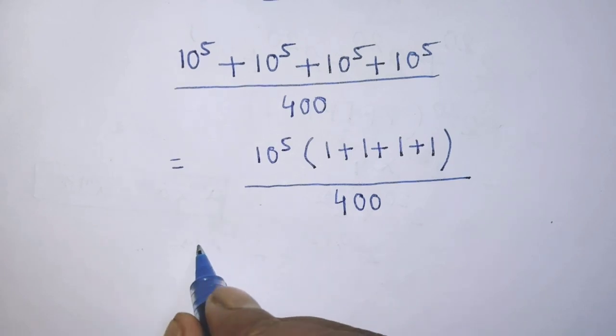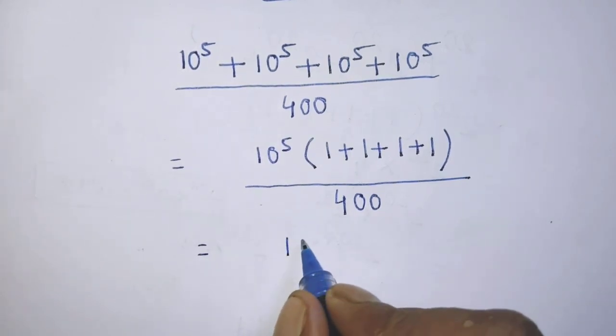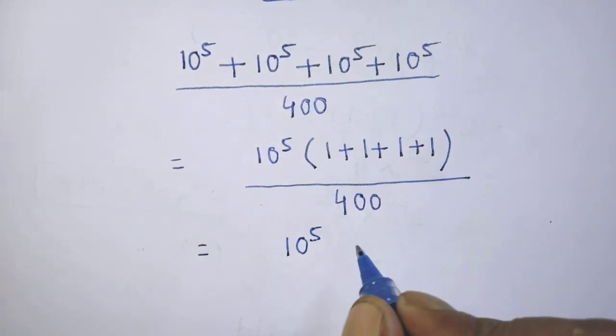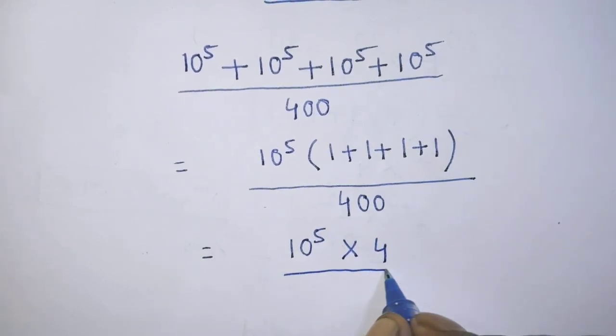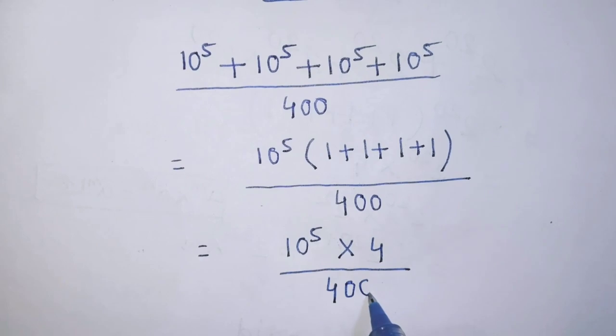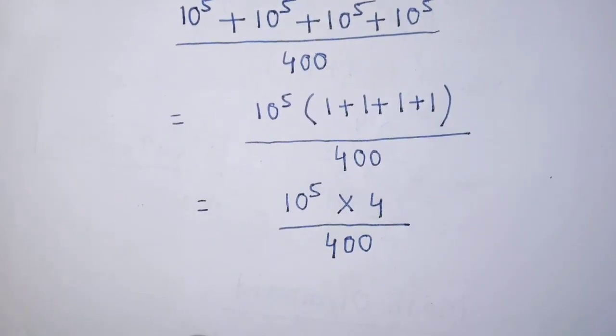After that, it will be 10 to the power 5 times 4 over 400.